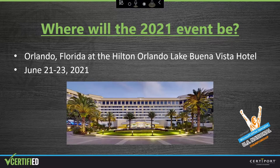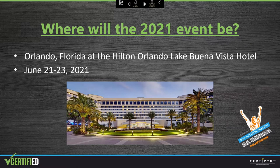The 2021 U.S. National Championship will be held at the Hilton Orlando Lake Buena Vista Hotel in Orlando, Florida, June 21st through the 23rd, 2021. It's a great venue that we've used in the past, and we have already begun to plan for this event. We're anticipating that the 2021 U.S. National Championship will be the largest and best event we've ever had, and we hope that you and some of your students can make it.